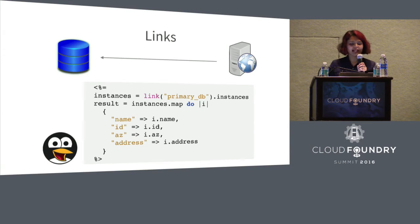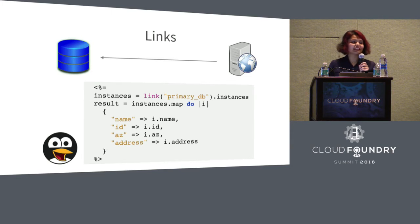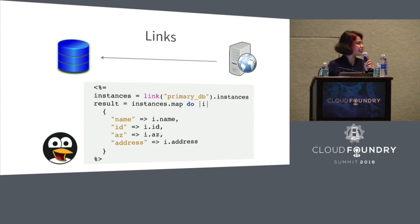As a release author, you also have access to other things that Links provides in your release templates. For example, this release author is consuming name, ID, and address from primary DB. This also reduces the amount of YAML because you no longer need to duplicate all these properties across all jobs in your manifest — you can now just specify a dependency on a Link. A good success story for Links is Concourse: they used to use a lot of static IPs in their deployments, but now their deployment manifest is completely free of static IPs and is only using Links.